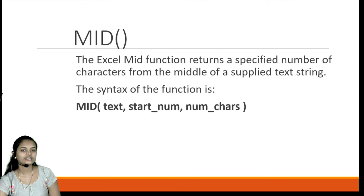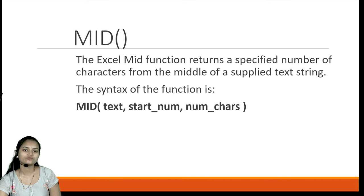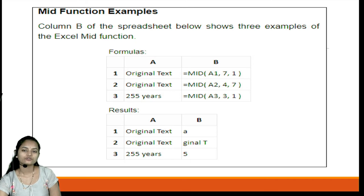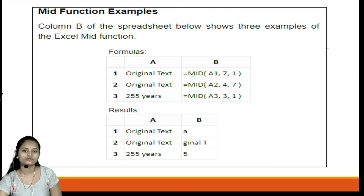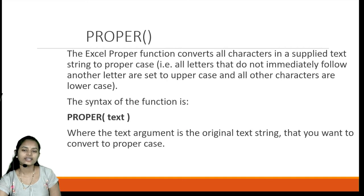Next is the MID function. This Excel MID function returns a specified number of characters from the middle of a text string. The syntax is MID(text, start_num, num_chars), specifying where to start and how many characters to read. In the example, =MID(cell, 7, 1) is applied, so it reads from the 7th position and returns one character — in this case, the character 'a' at position 7 in the string.